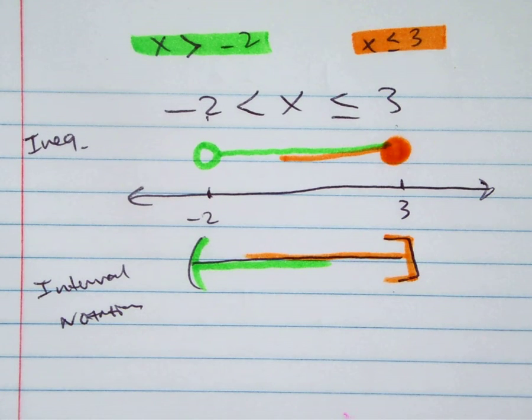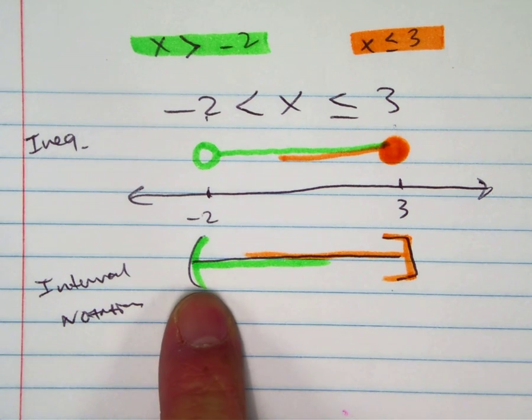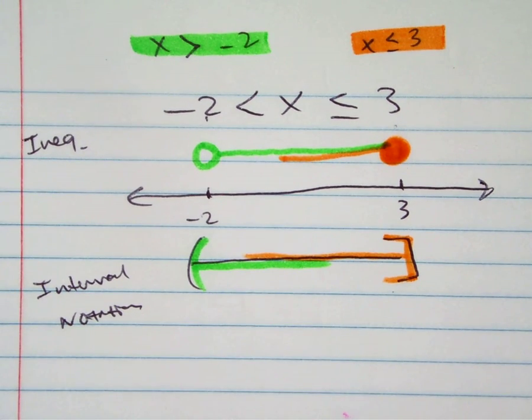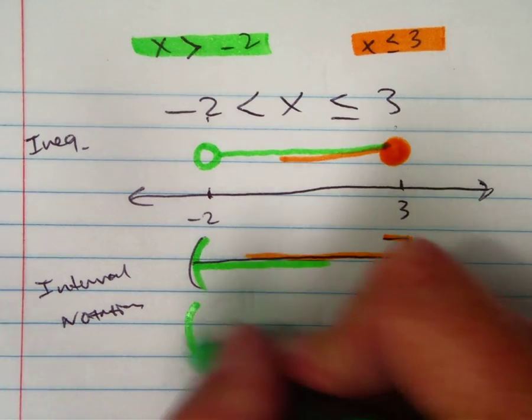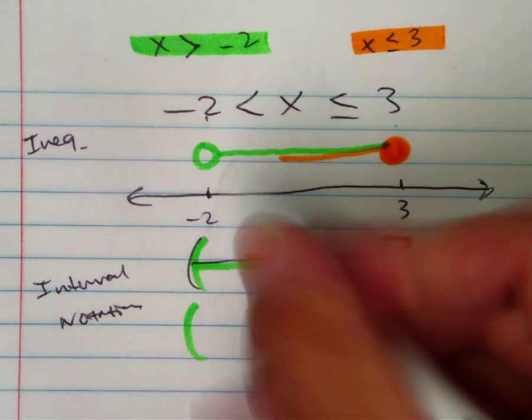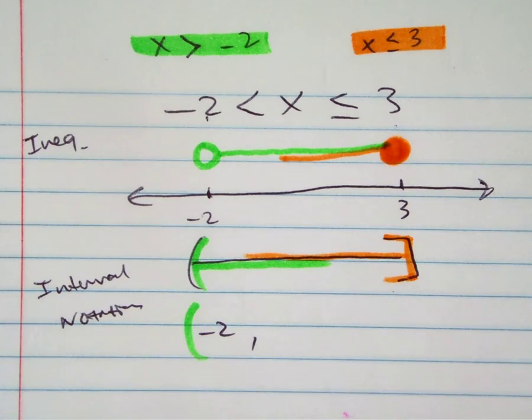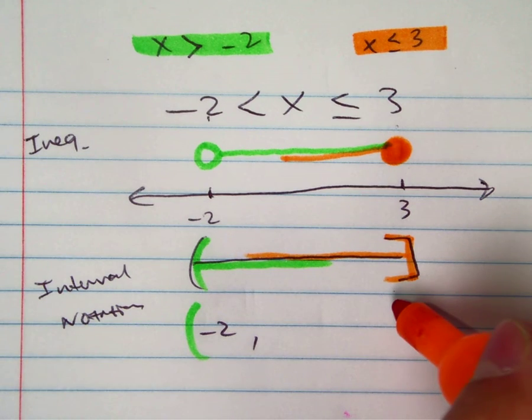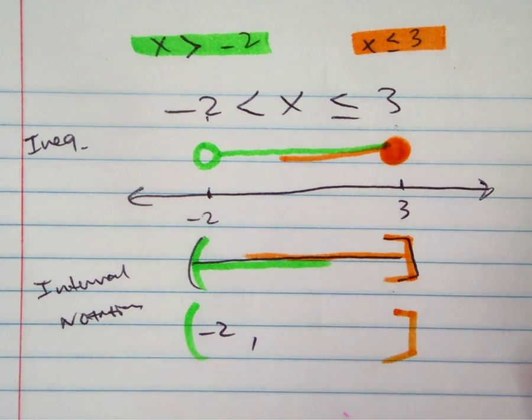Let's write this in interval notation now. On my left side of my graph, what do I have? You have a parenthesis, negative 2, comma. What do you have on the right-hand side? You have a bracket with a 3.